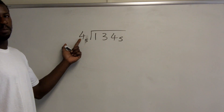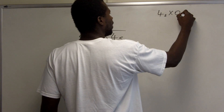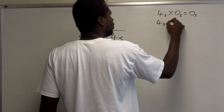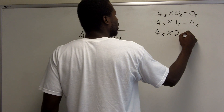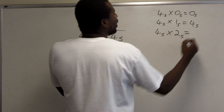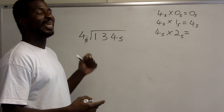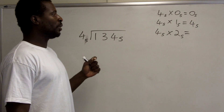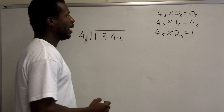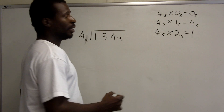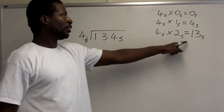I really only have to know my 4 times tables in base 5. So 4 base 5 times 0 base 5 is 0. 4 base 5 times 1 base 5 is 4. 4 base 5 times 2 base 5 — well, 4 times 2 in base 10 is 8, so we need to convert that 8 base 10 into a base 5 number. There is one group of 5 in 8, and the remainder is 3.